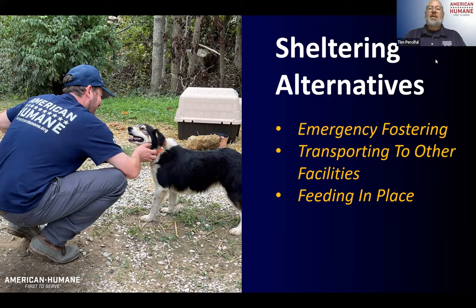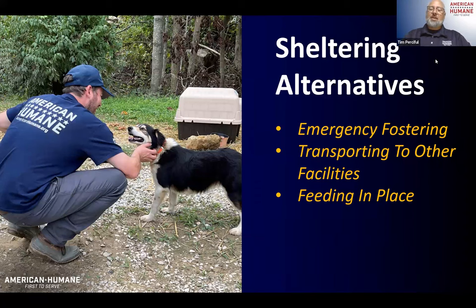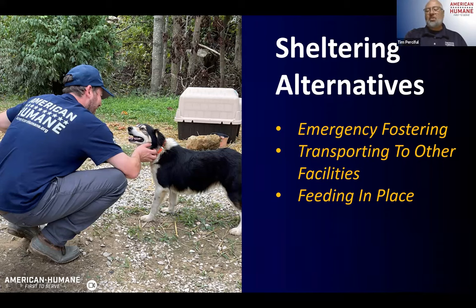There might also be a need for transporting to other facilities if your shelter is too small or you don't have the ability to maintain a temporary facility. We were in Louisiana once during a hurricane — still in tents when a second hurricane came through. Another strong alternative is feeding in place, which can be the least stressful for animals since they remain in their environment.